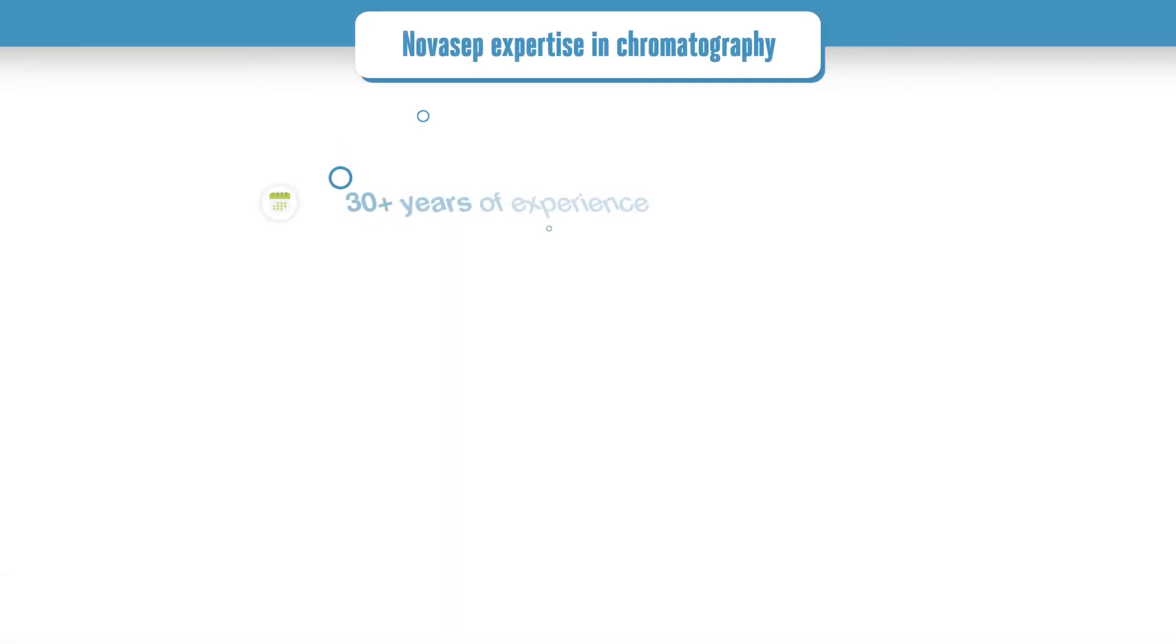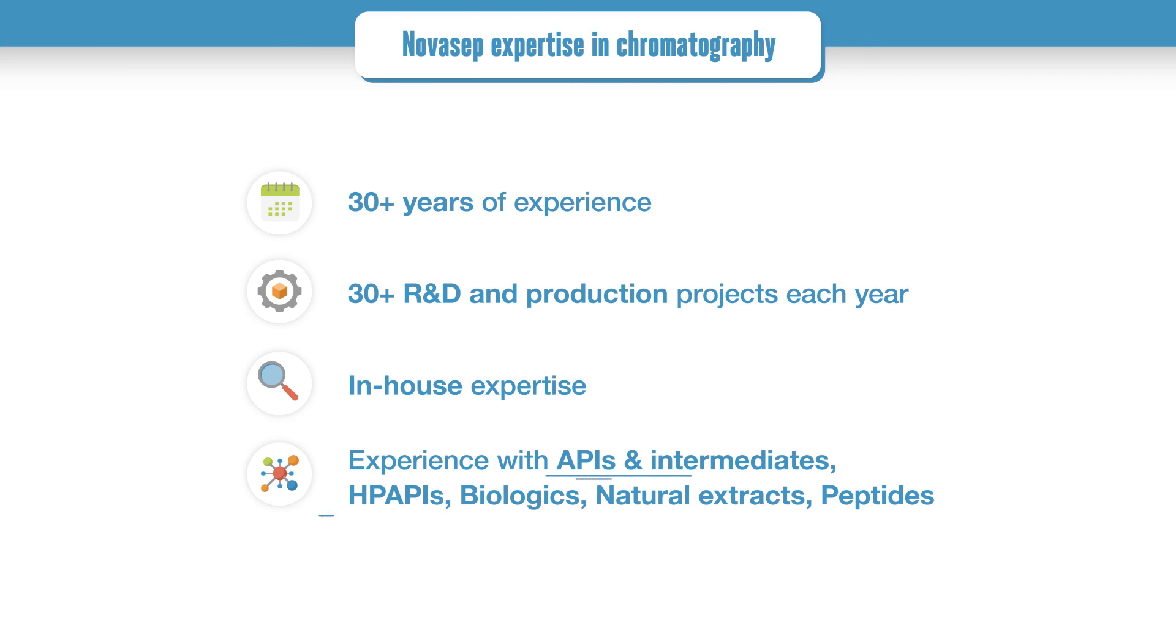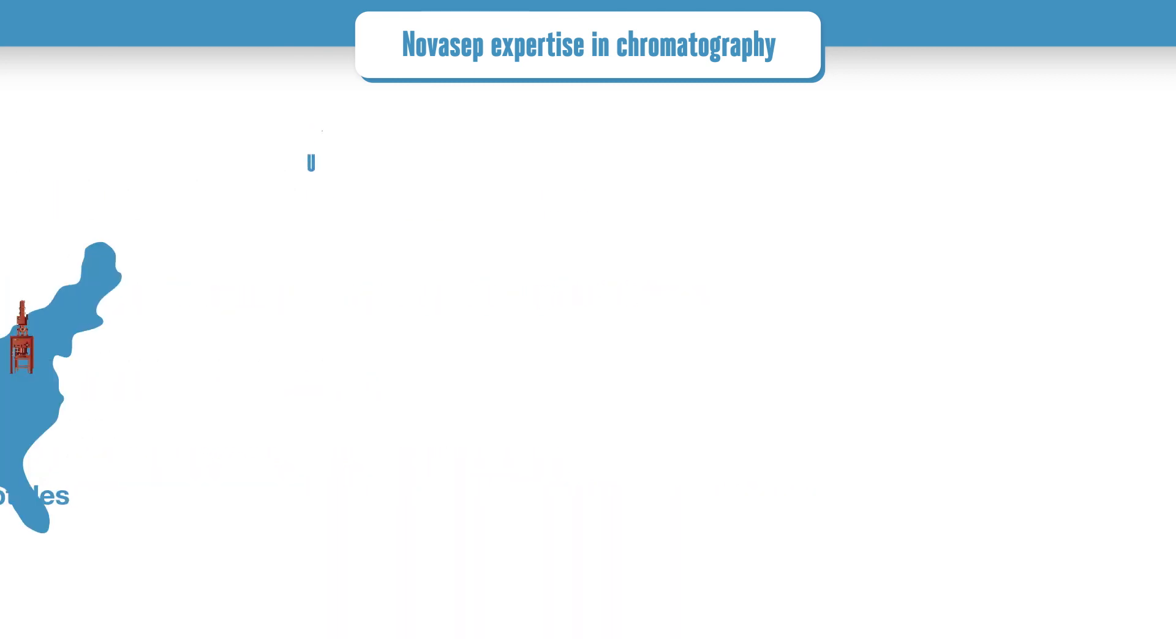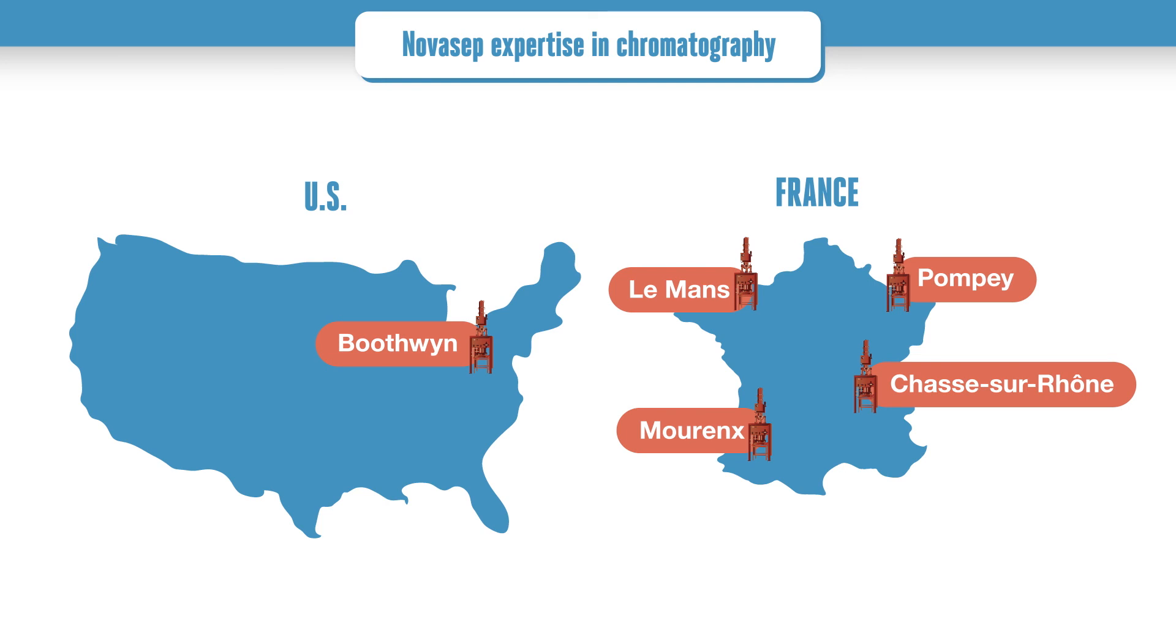Novacep has more than 30 years' experience in streamlining the development of preparative chromatographic processes, based on 30-plus successful R&D and production projects each year. A wide range of Novacep high-performance automated equipment is installed and dedicated to CDMO activity across five of our sites. Novacep offers commercial CGMP manufacturing from a few kilos to hundreds of tons.